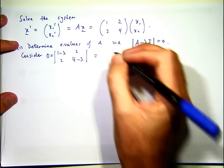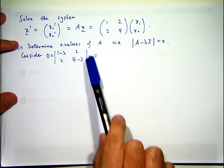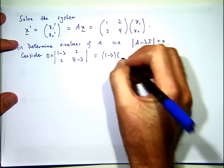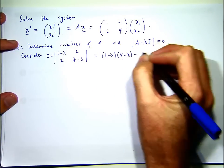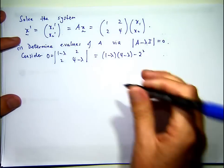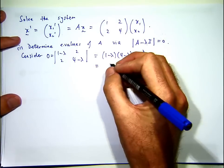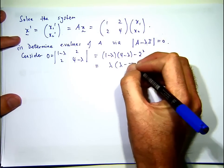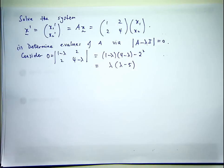If we expand the determinant, that times that minus that times that, and if I simplify the algebra there and factorize, I'll end up with the following.